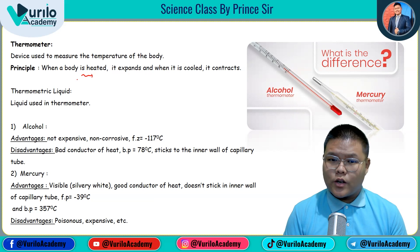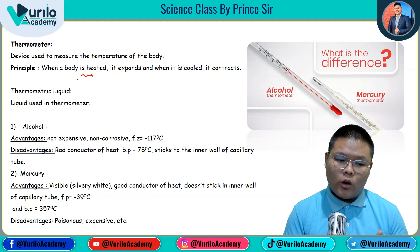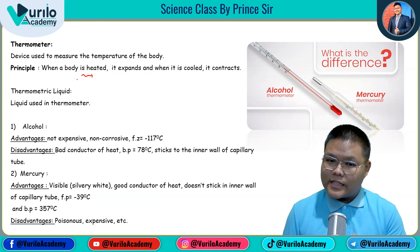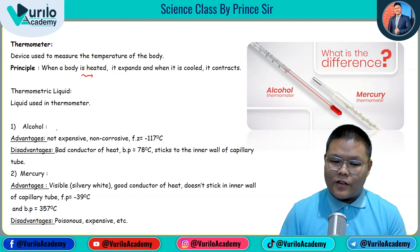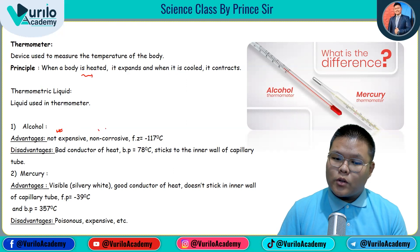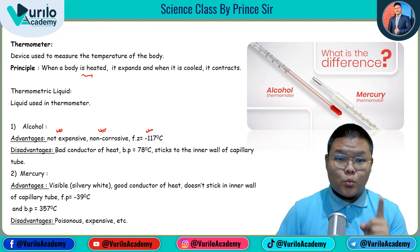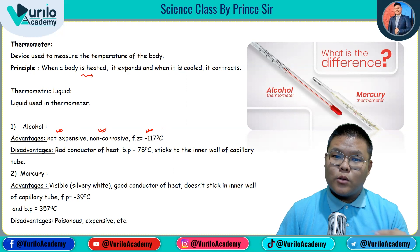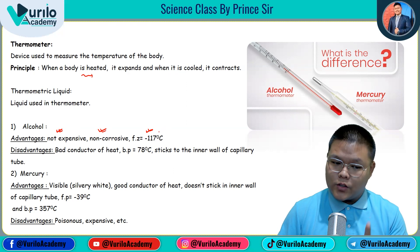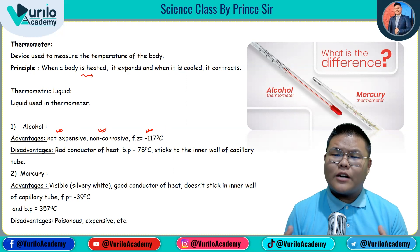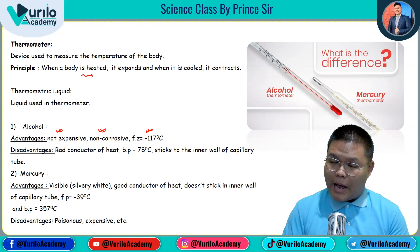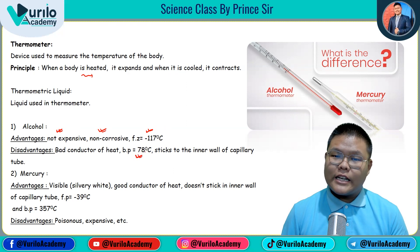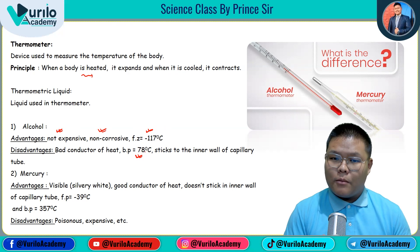Generally two types of liquids are used in thermometers: alcohol and mercury, each with their own advantages and disadvantages. Alcohol's advantages: it is inexpensive, non-corrosive, and non-poisonous. Its freezing point is minus 117 degree centigrade, so it can be used at extremely low temperatures. Disadvantages of alcohol: it is a bad conductor of heat, and its boiling point is only 78 degree centigrade, so it cannot measure temperatures above 78 degree centigrade.